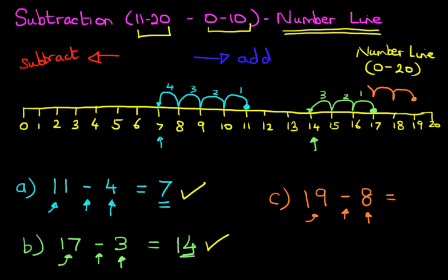1, 2, 3, keep going. 4, 5, 6, 7, and 8. We've taken 8 jumps to the left. We have landed on number 11.